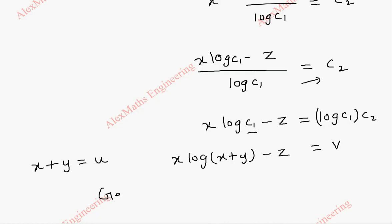So from this we can write the general solution. And the general solution is f of u comma v equal to 0.